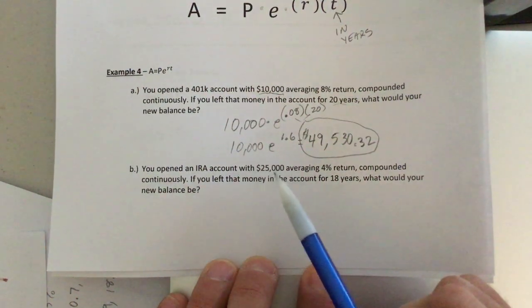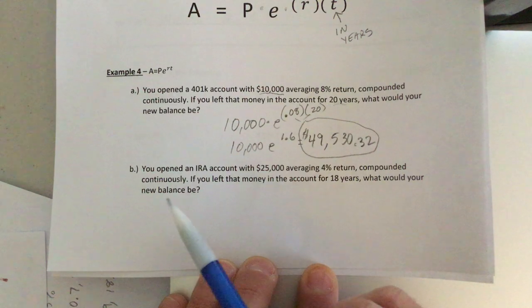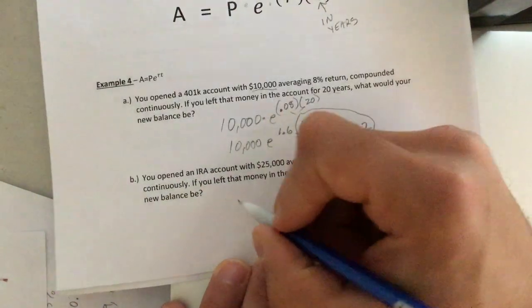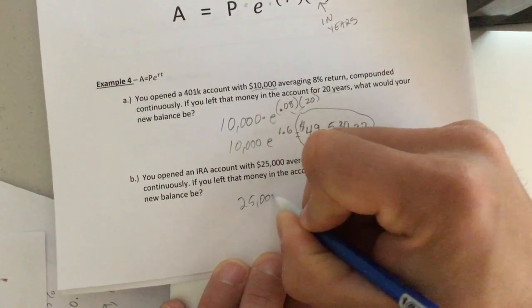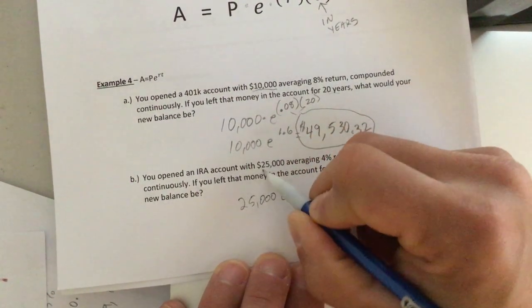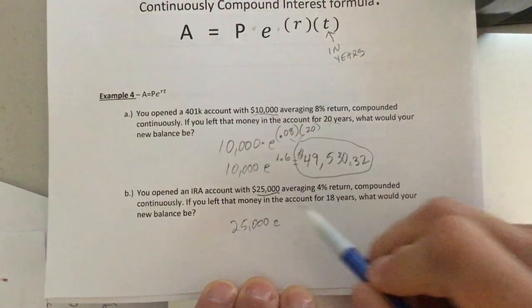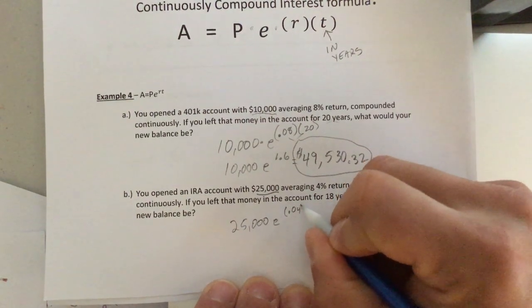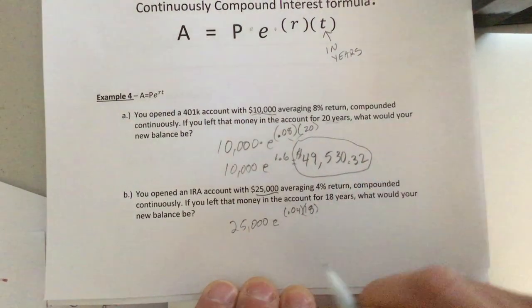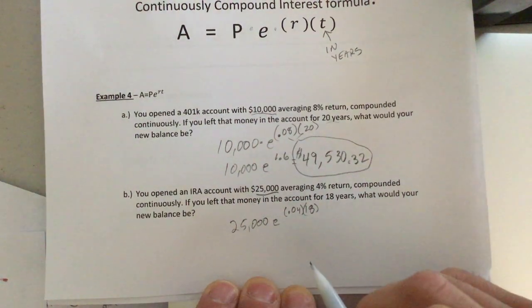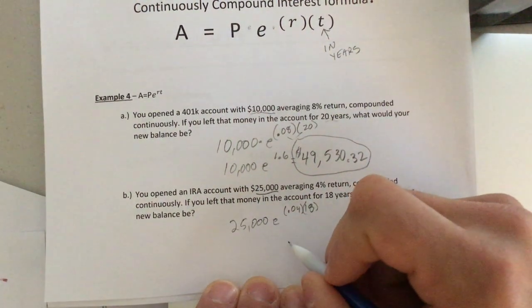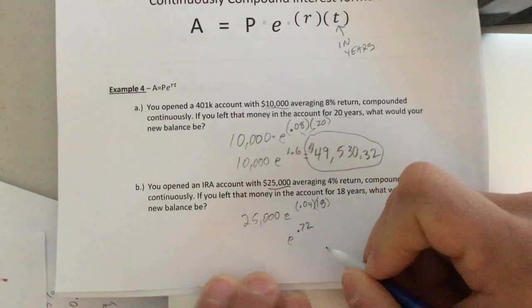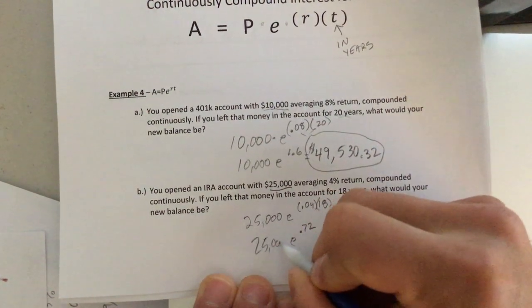An IRA with $25,000 averaging 4% return compounded continuously. If you left that money in the account for 18 years, what would your new balance be? All right, same idea. We're just going to roll. Because I know the video is getting long. 25,000, the principal times E to the rate, which is 0.04 times time, which is 18. Okay. 0.04 times 18, unless I'm nuts, which is possible. We get E to the 0.72 power times 25,000.